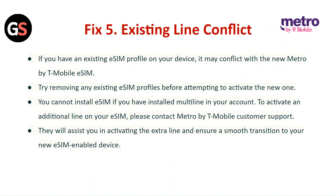Fix 5: Existing line conflict. If you have an existing eSIM profile on your device, it may conflict with the new Metro by T-Mobile eSIM. Try removing any existing eSIM profiles before attempting to activate the new one. You cannot install the eSIM if you have a multi-line setup in your account. To activate an additional line on your eSIM, please contact Metro by T-Mobile customer support — they will assist you in activating the extra line and ensure a smooth transition.